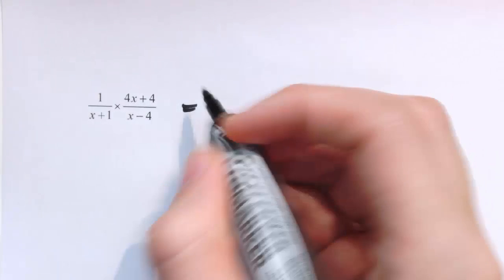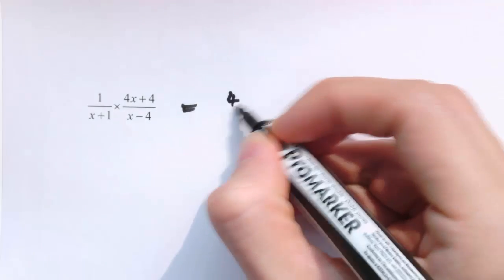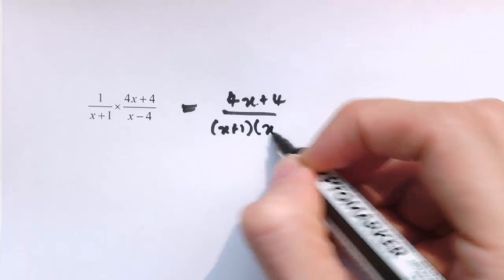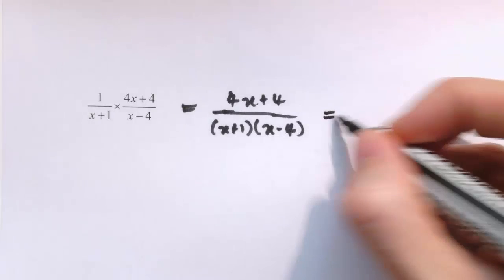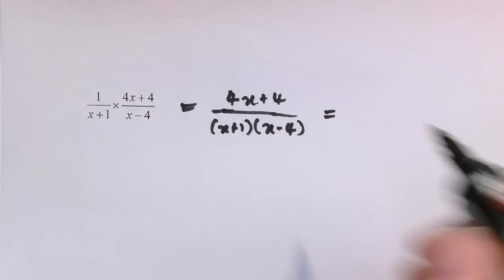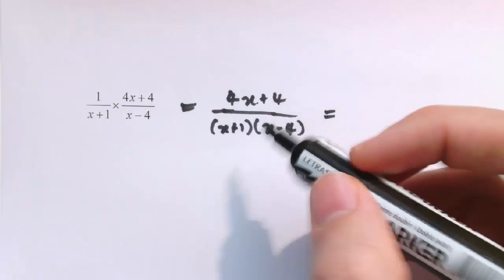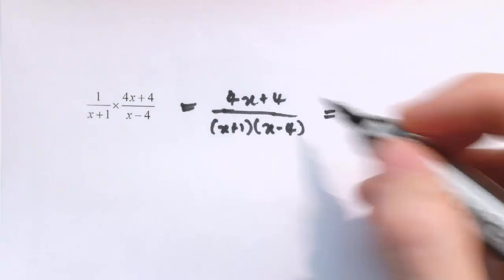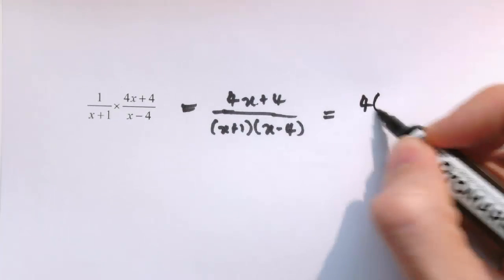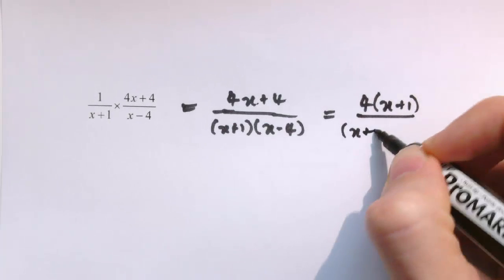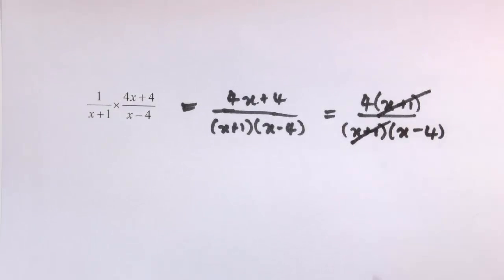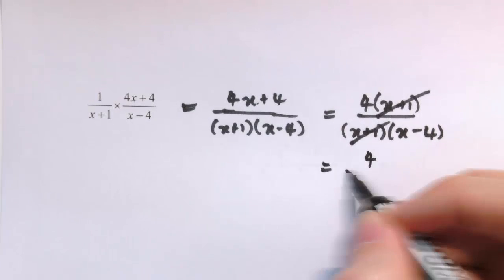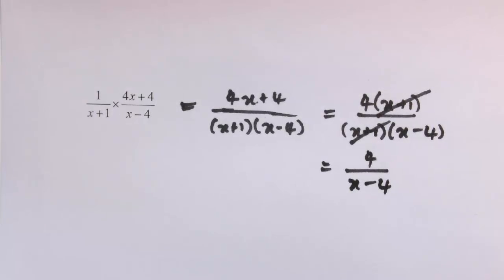In a multiplication example, we get 1 times (4x+4) on top — which is just 4x+4 — and (x+1)(x−4) on the denominator. If it doesn't obviously cancel, remember we can try to factorize. Factorizing the numerator gives 4(x+1), and with (x+1)(x−4) on the bottom, we can cancel the factor of (x+1) to leave 4/(x−4).